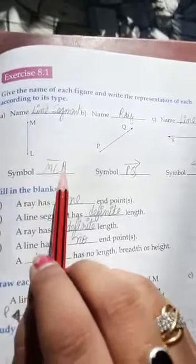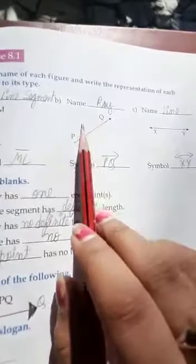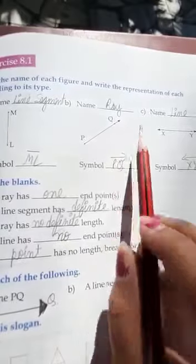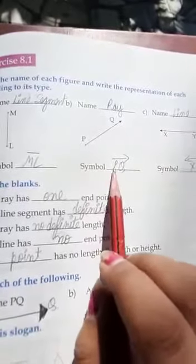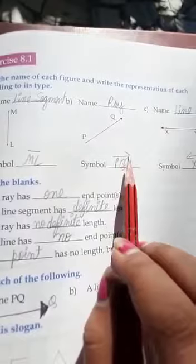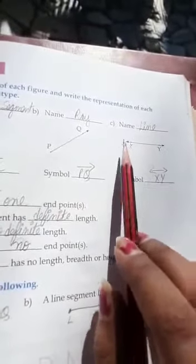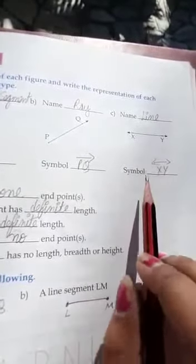Second picture is of a ray, as it has one end point and other side arrow is there, and its symbol will be PQ with a ray drawn upon it. Third diagram is of a line, as it has no end point, on both sides arrows are there, and its symbol will be XY with a line drawn upon it.